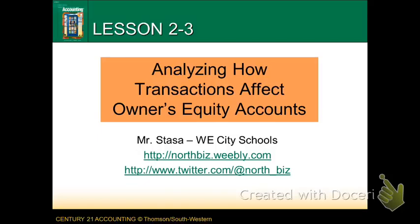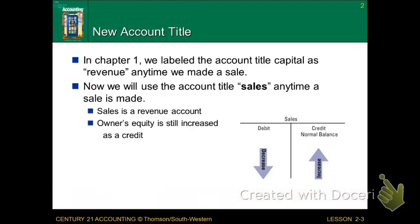Welcome to Section 2-3, Analyzing How Transactions Affect Owners' Equity Accounts. In Chapter 1, we labeled the account title Capital as Revenue any time that we made a sale. We had a series of columns, capital is all the way on the right, and any time we made a sale by receiving cash, or if we made a sale on account, we always labeled that as Revenue.